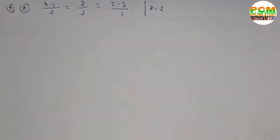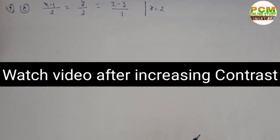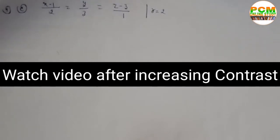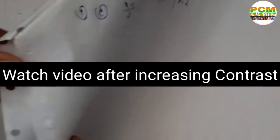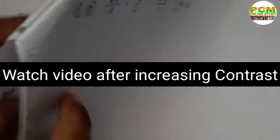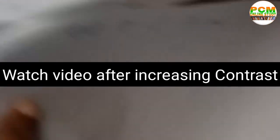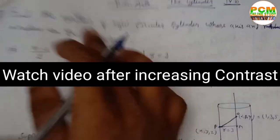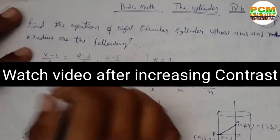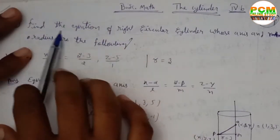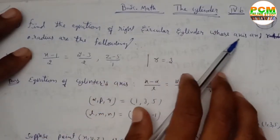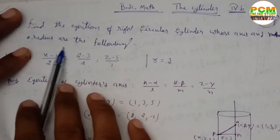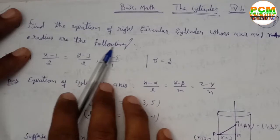Hello friends, welcome again. This is Prashant. Today I will discuss question number 1D. The question is: find the equation of a right circular cylinder whose axis and radius are given.